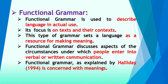Its focus is on texts and their contexts. Functional grammar focuses more upon texts and their contexts. A text is any spoken or written expression — anything that you speak or write. Every text has its own context and background. Without context and background, any text cannot come into being. So functional grammar looks at how a text has been created and what effect it has upon the speaker and the writer.